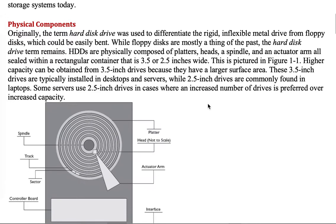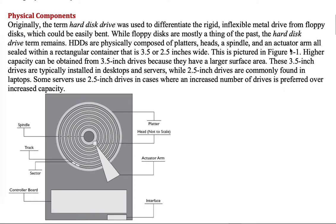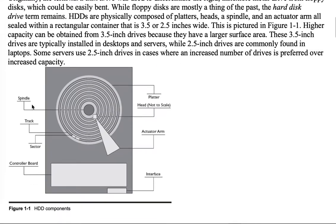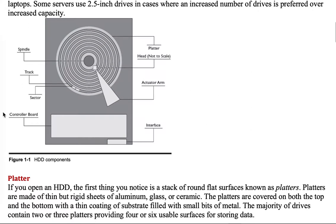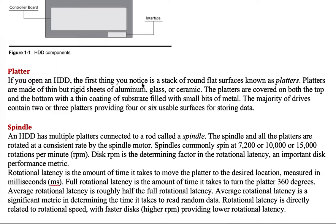Hard disk drives are physically composed of platters, heads, a spindle, and an actuator arm — all sealed in a rectangular container. They are either 3.5 or 2.5 inches wide. In a diagram, you can see the spindle in the center, the actuator arm, and the read/write head on top of it. There are also platters, tracks, sectors within each track, and the controller board interface.